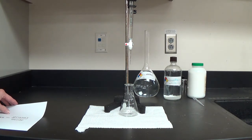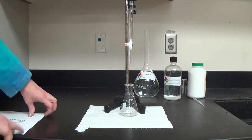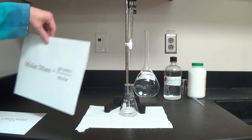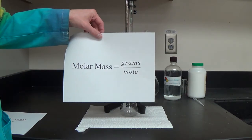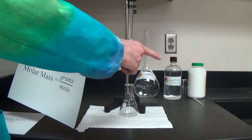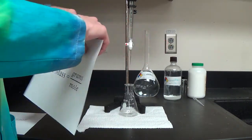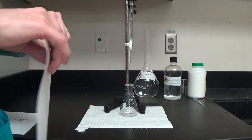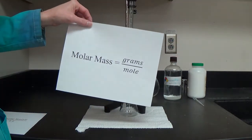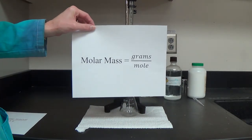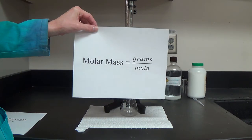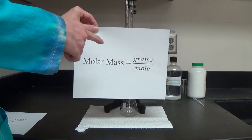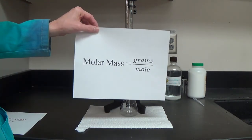To determine molar mass, what do you need? Simply, we need grams per mole. I have an unknown solid acid right here, and I want to determine a molar mass for it. I need to know grams and I need to know moles. How might I find grams of an unknown solid acid?